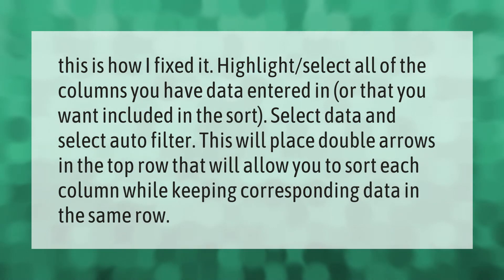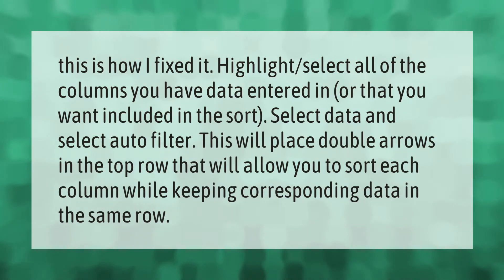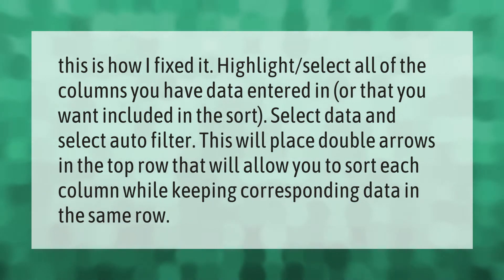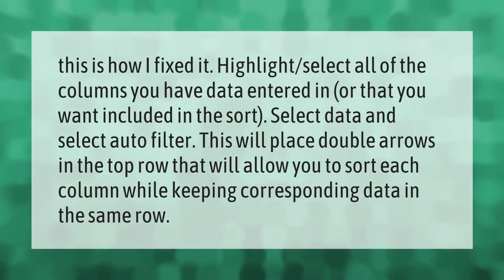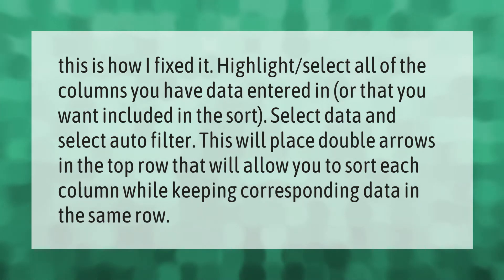Here is how to use Auto Filter for sorting. Highlight and select all of the columns you have data entered in, or that you want included in the sort. Select Data and then select Auto Filter. This will place double arrows in the top row that will allow you to sort each column while keeping corresponding data in the same row.